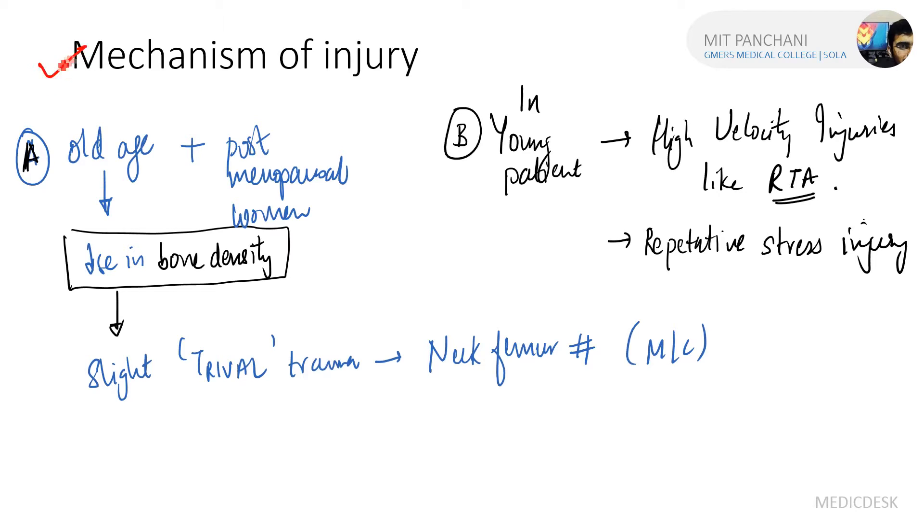The mechanism of injury for fracture of the femur neck: it usually occurs in old patients and postmenopausal women. There is decreased bone density, and because of that, even slight trauma or trivial trauma will lead to femur neck fracture.